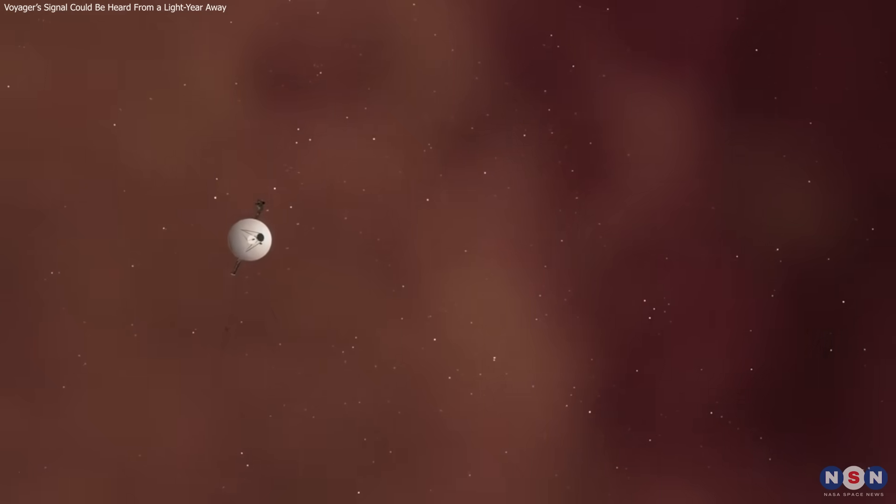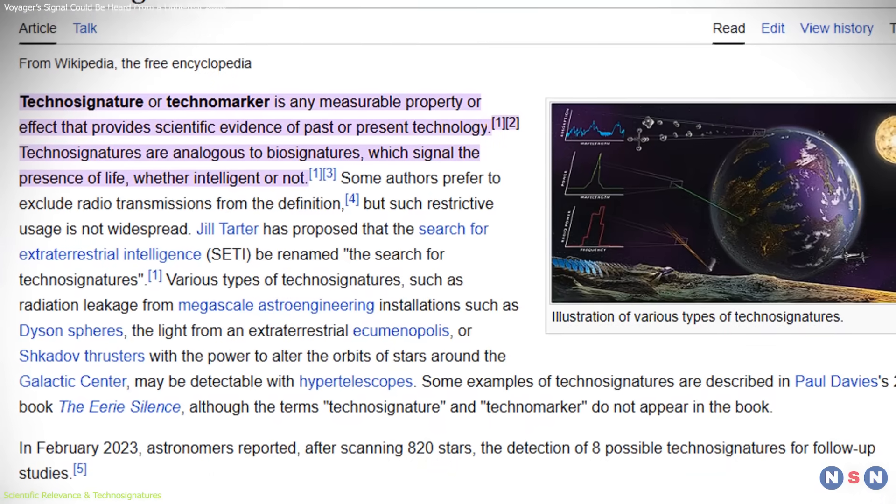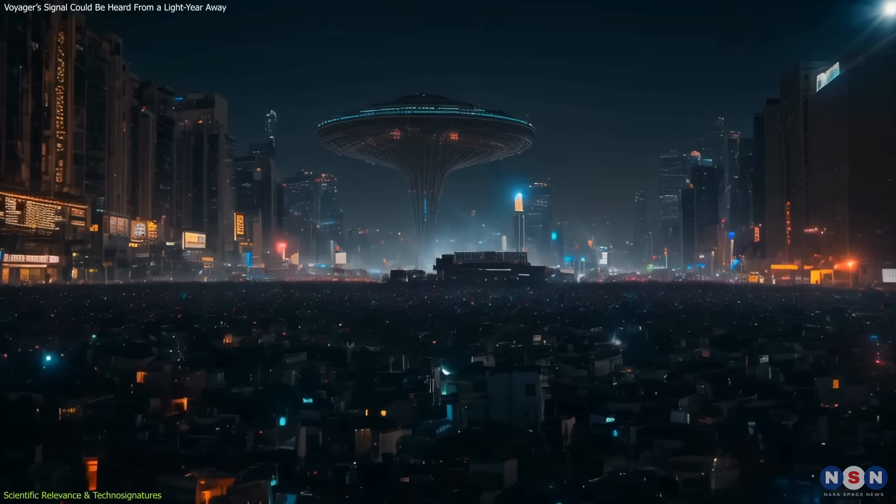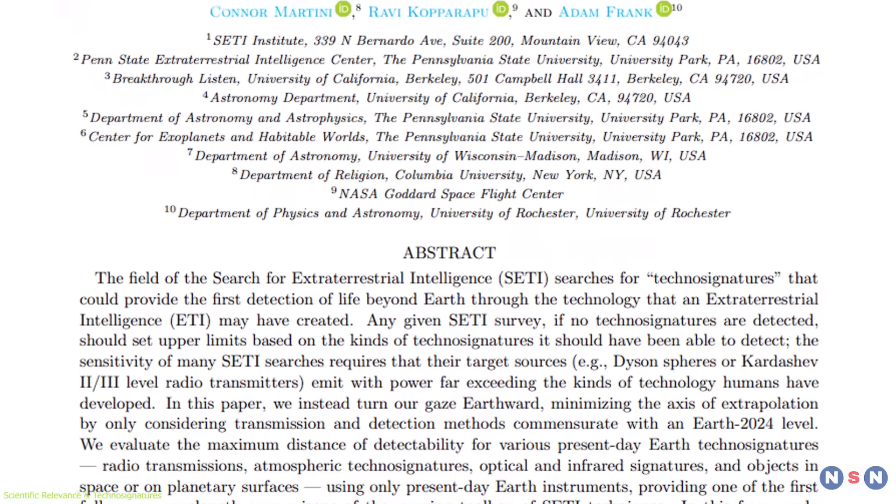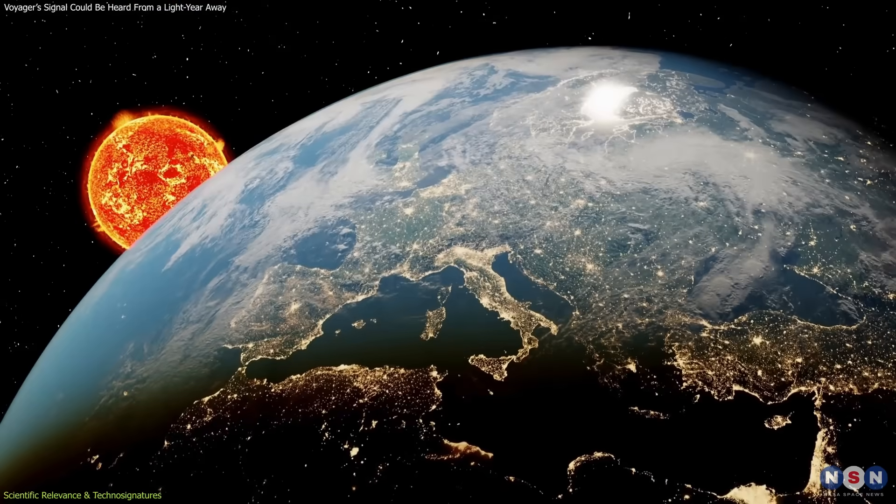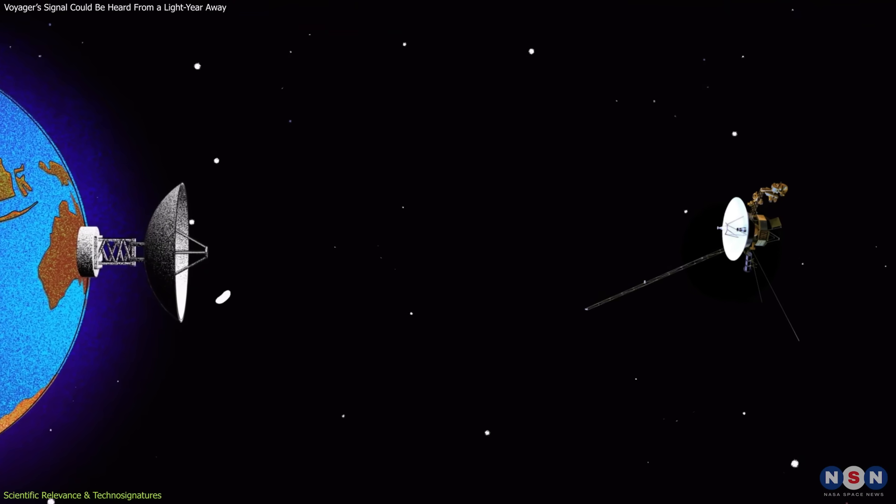One promising avenue is through technosignatures, which are indicators of technology rather than biology. These could include targeted radio messages, atmospheric pollution, large-scale energy usage, or unintentional electromagnetic leakage. Dr. Shaikh's study doesn't attempt to detect alien technosignatures. Instead, it evaluates our own, using Voyager's signal and Earth's Deep Space Network as a case study.